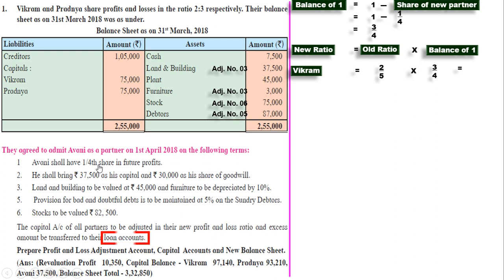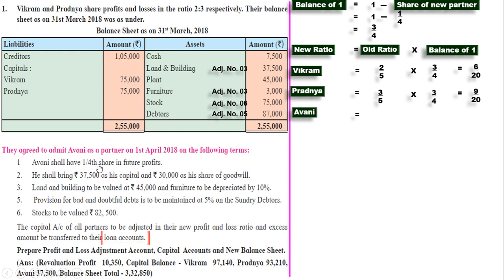Vikram का new ratio 6/20. Prajna का: 3/5 × 3/4 = 9/20. Avni का: (2+3)/5 × 1/4 = 5/20. तो new ratio आया 6:9:5. New ratio निकल गया है, अब new capital निकालना है. Formula: new partner's capital ÷ new partner's new share. Avni का capital 37,500, new share 5/20. तो base = 37,500 ÷ (5/20) = 7,500.